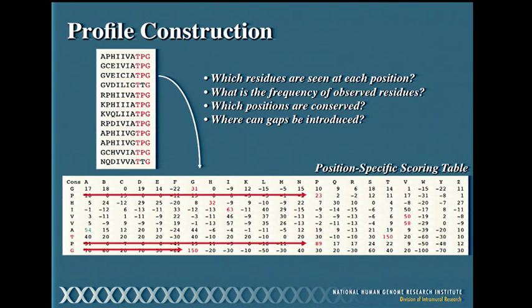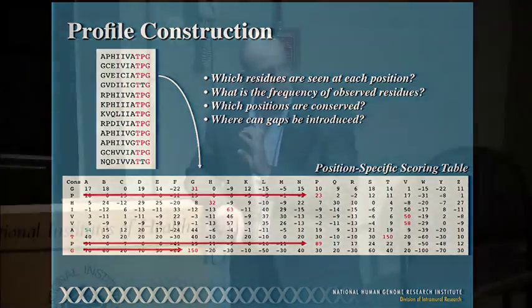Once we have this scoring table, it's used as the basis for comparison. We can take a single sequence and compare it to hundreds or thousands of these profiles, each constructed to represent a particular protein family. The good news is you don't have to make these—they're already available, and we'll see examples of that shortly.